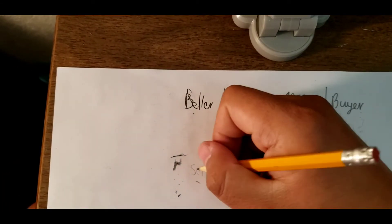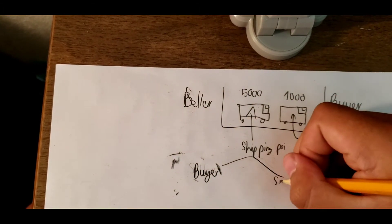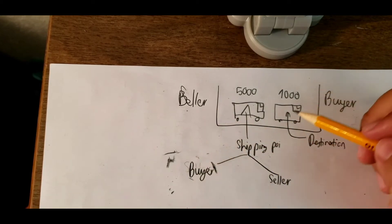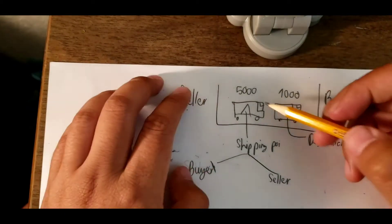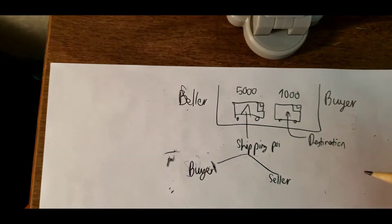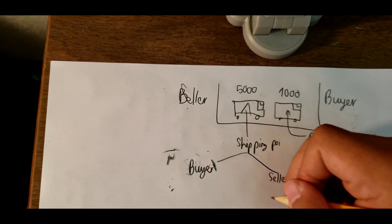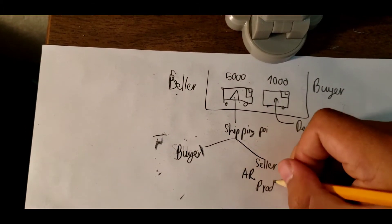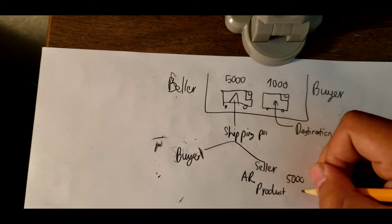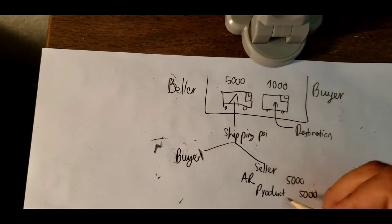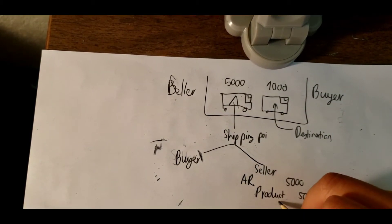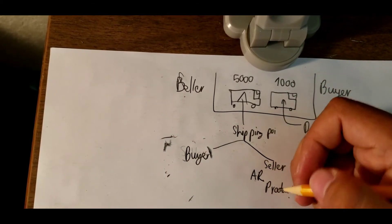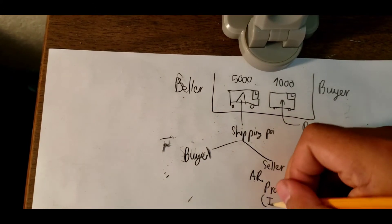When we use shipping point, the seller and buyer report together. For the seller: because the seller sold five thousand to the buyer, we have accounts receivable and we reduce the inventory — five thousand and five thousand. The product is in assets, so it will be reduced, and accounts receivable will go up. Sometimes it will go to inventory too.